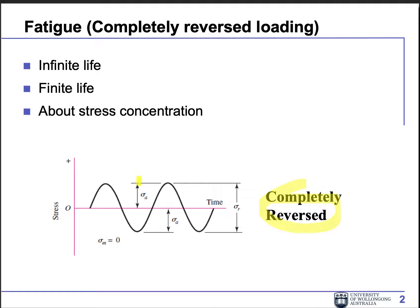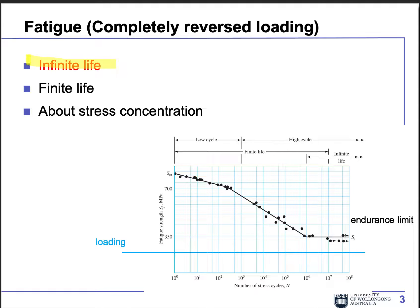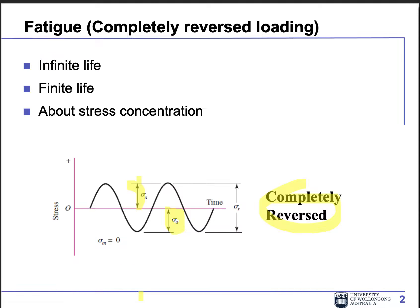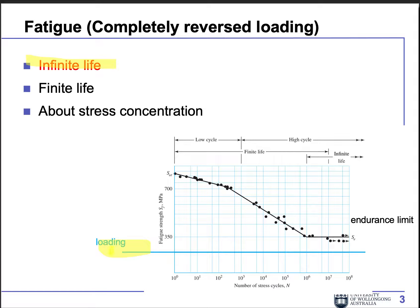In this case, we have the variation of loading sigma_a, but the average or mean value of the loading is zero. So it changes along the zero value, with positive and negative amplitude the same, sigma_a.